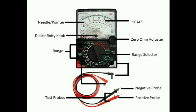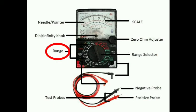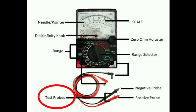And the next is the range select knob — it selects the function and scale. And the next is the range, which allows more accurate measurement for small values. And the last is the test probe. There are two: the positive probe, which is the red one, and the negative probe, which is the black one. They are used to connect to the circuit or the device under test.